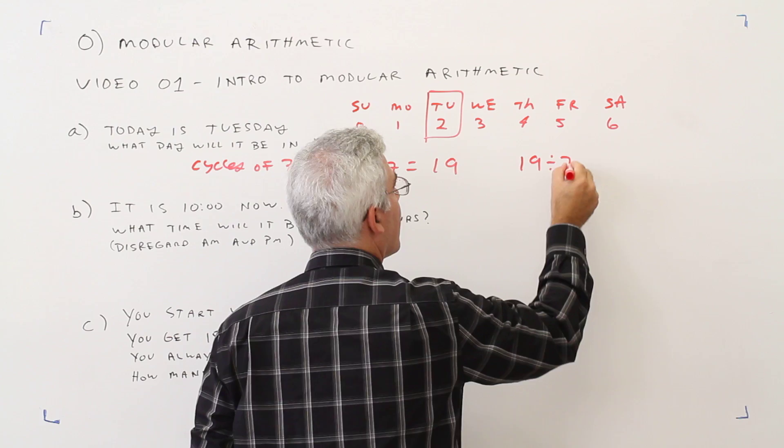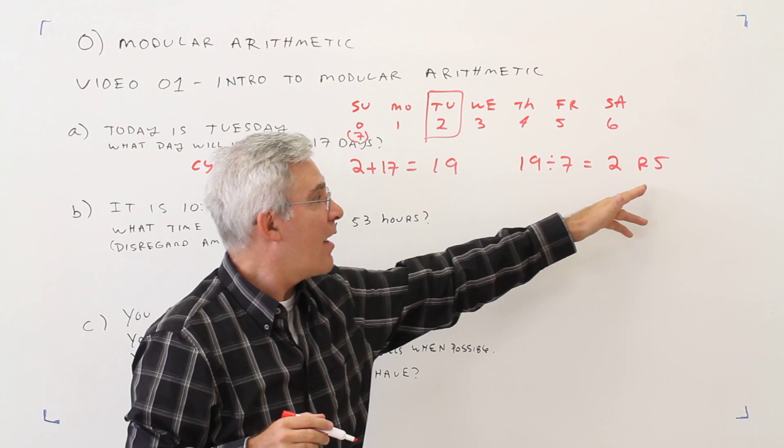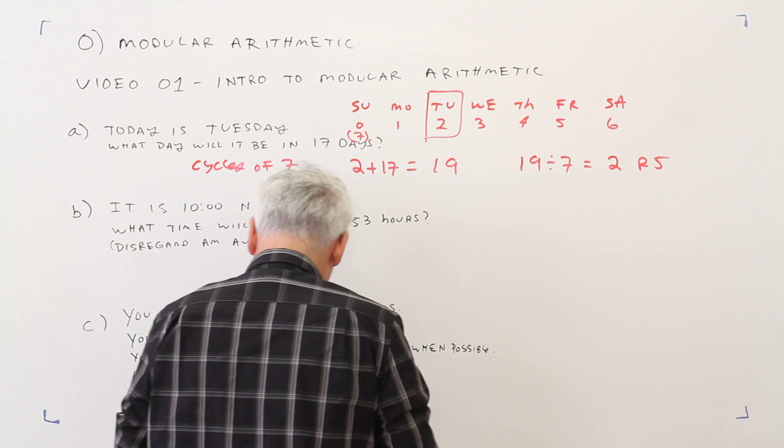So 19 divided by 7, 2 times 7, 14, remainder 5. So what that means is I've cycled two complete cycles, and then I'm left on the day associated with 5, which is Friday.